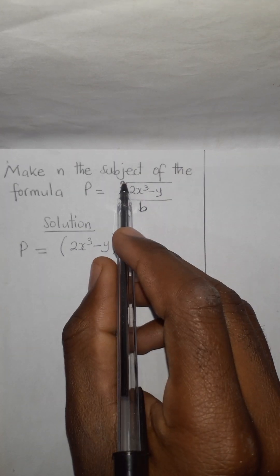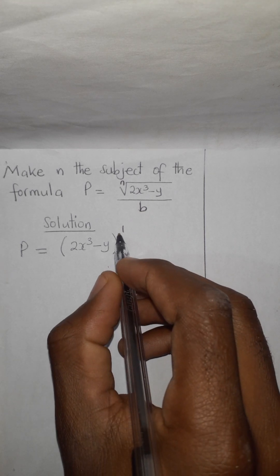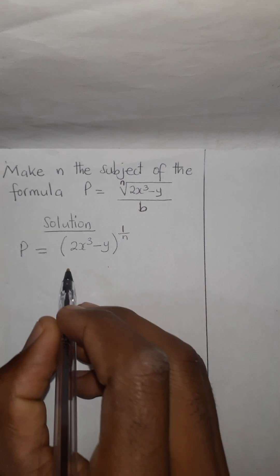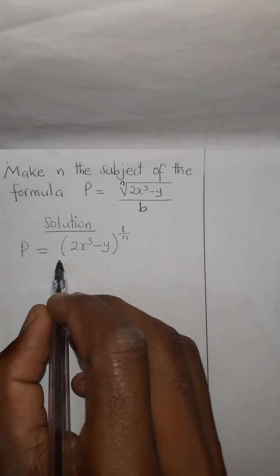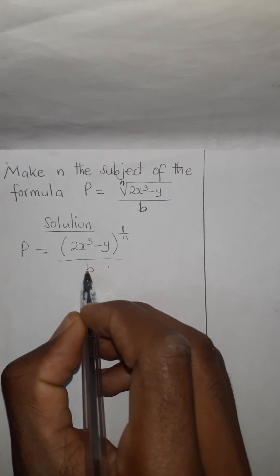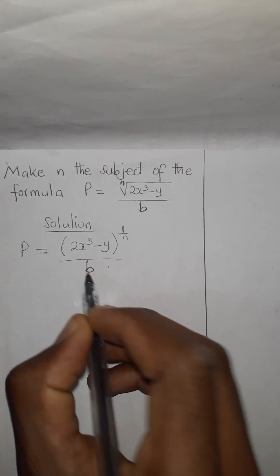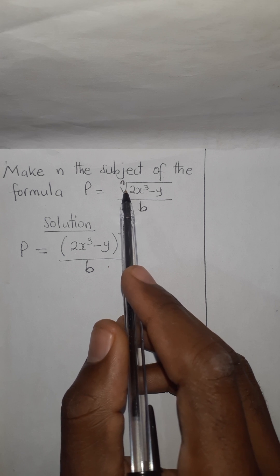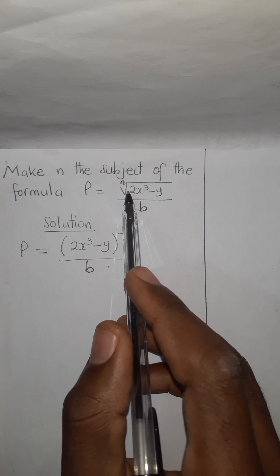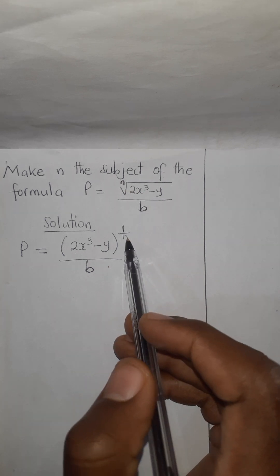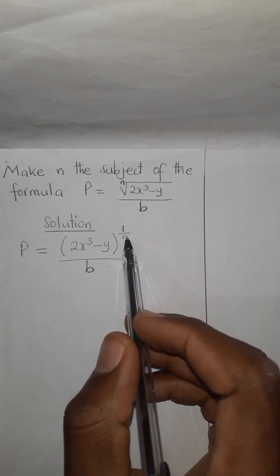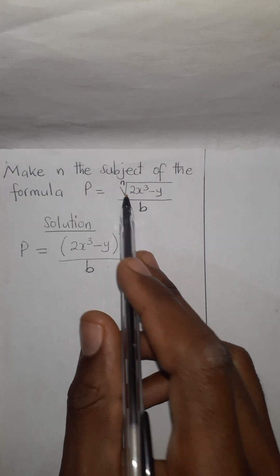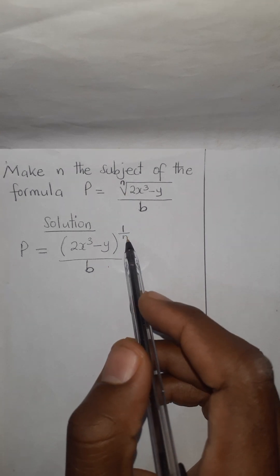And this one becomes the denominator. So our denominator is n. Then the whole of this is over b. We have converted. We can leave it the way it is or we can convert it to powers. So, conversion of the root to the power is this.